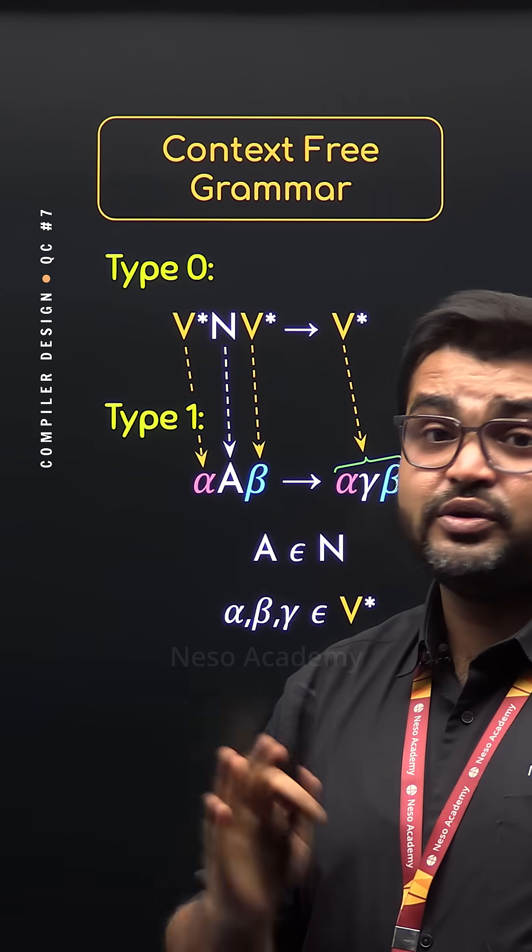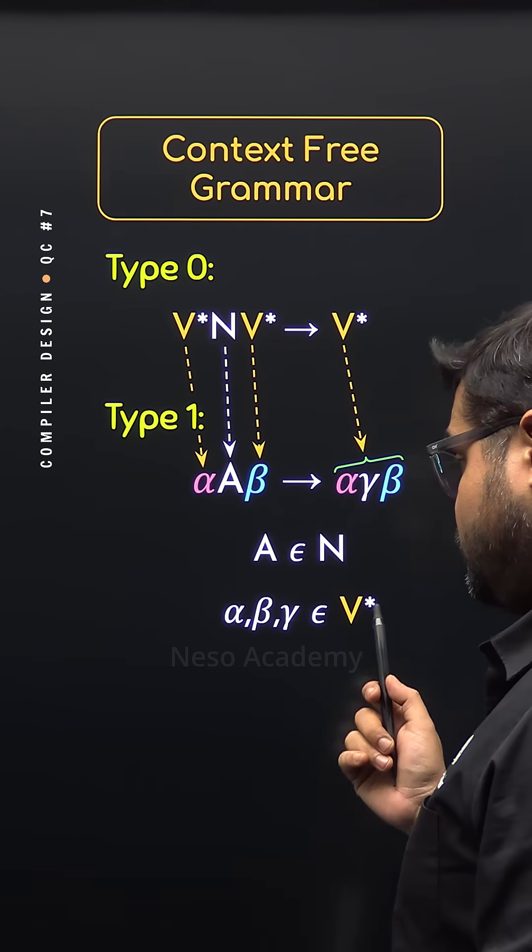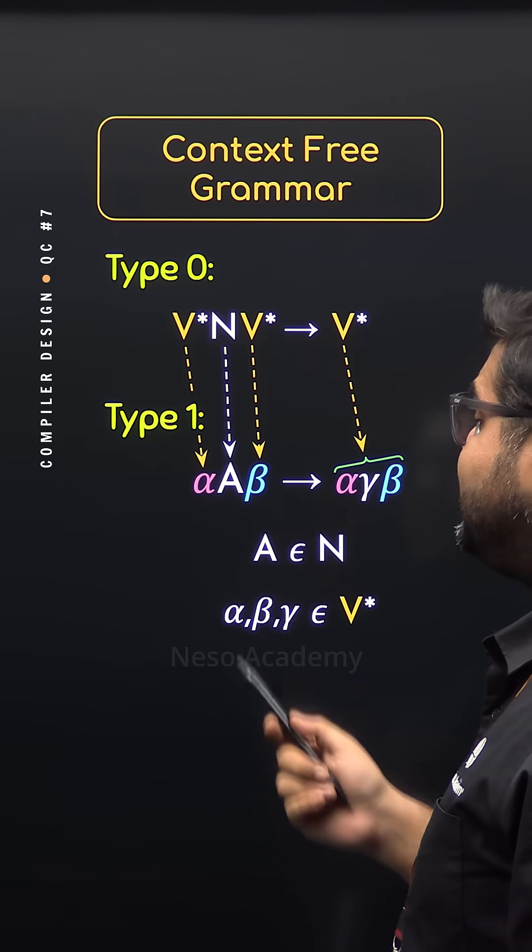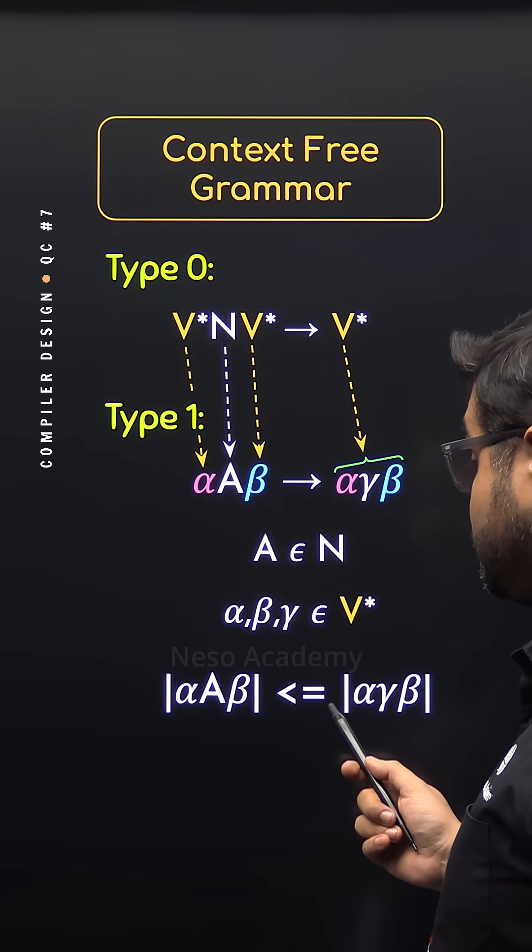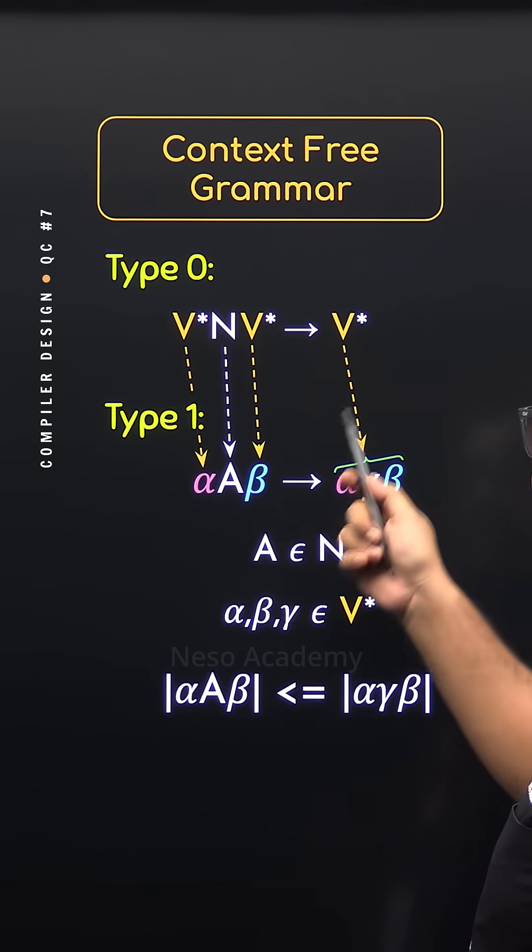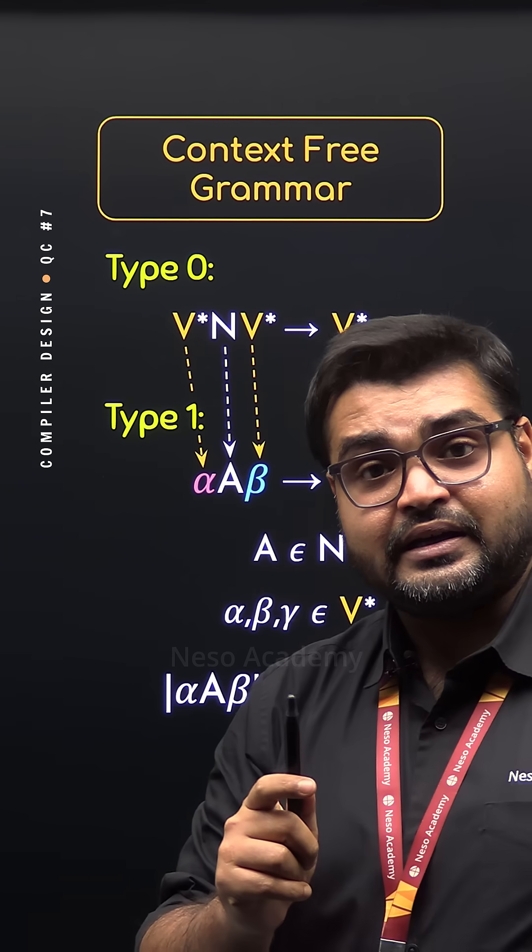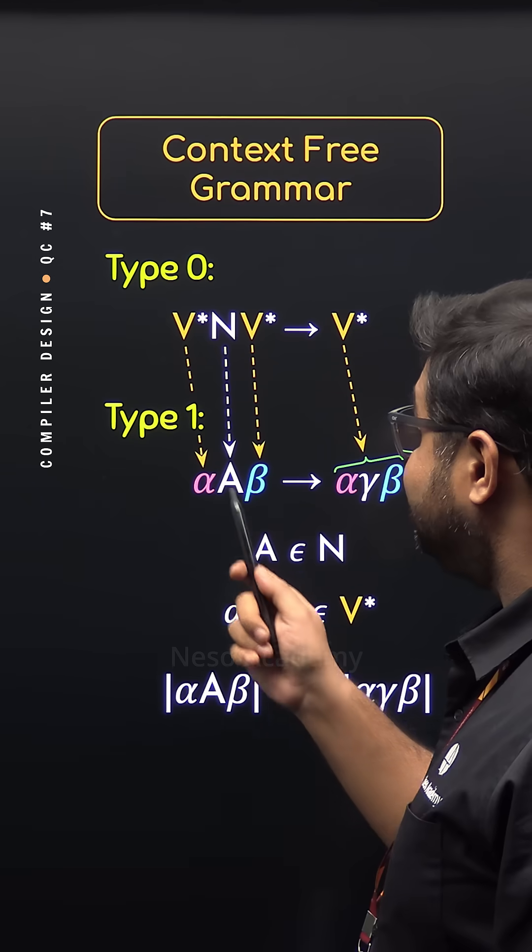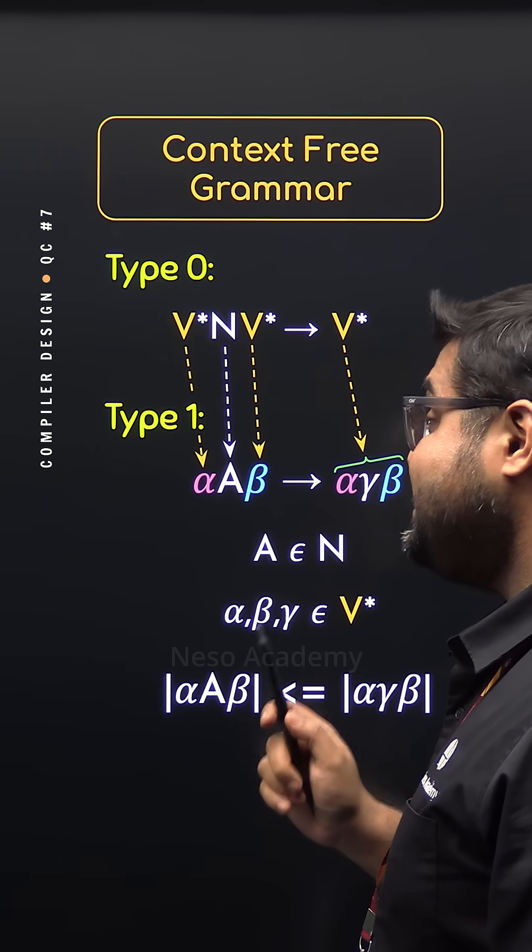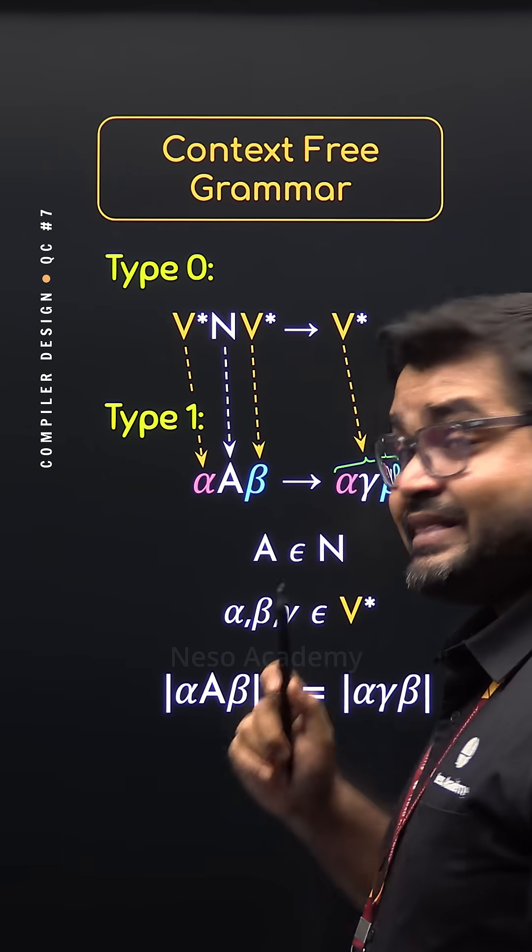We also know in case of Type 1, the number of elements in the left-hand side should always be less than or equal to the number of elements of the right-hand side. Most importantly, A can only produce γ in association with the left context α and the right context β.